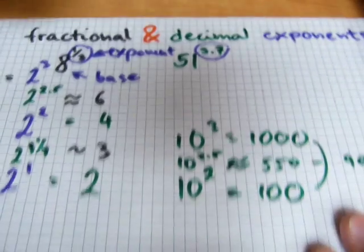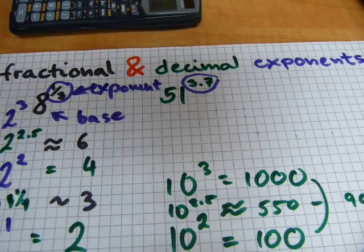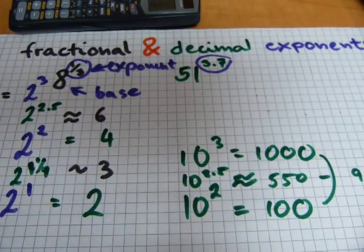So, 10 to the power of 2.5 is going to hit the graph at 316.227. So, that will be my brief explanation for fractional and decimal exponents and their meaning.